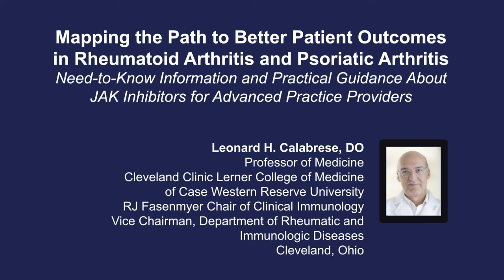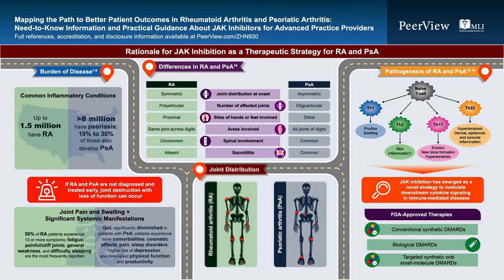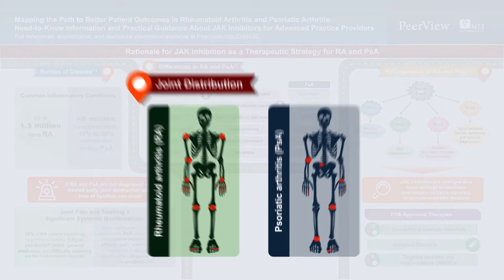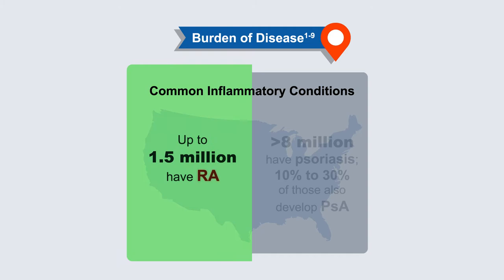Hi, this is Dr. Len Calabrese. I'm a professor of medicine at the Cleveland Clinic Lerner College of Medicine in Cleveland, Ohio. Welcome to this unique educational activity focusing on the role of JAK inhibitors in the treatment of rheumatoid arthritis and psoriatic arthritis. RA and PSA are common chronic inflammatory diseases characterized by pain and swelling in the joints and a propensity for destructive arthritis. RA is prevalent in rheumatology practices, with an estimated 1.5 million Americans — about 1% of the population — affected.